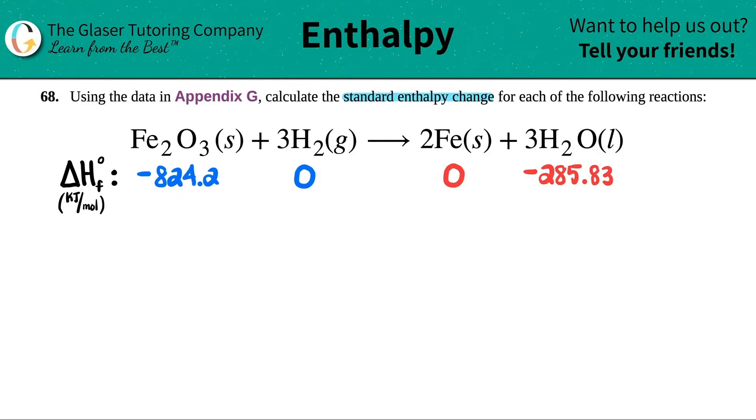Fe2O3 solid plus 3H2 gas will yield 2Fe solid plus 3H2O liquids. Now I already see that there are coefficients here, so that means that this reaction is already balanced, so we don't have to worry about checking to see if it's balanced.